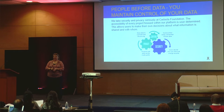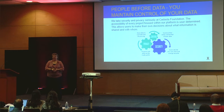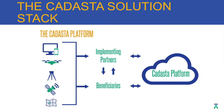If you go to cadasta.org, in our resources section, we've written about the risks and opportunities of open data in land. This is the toned-down version of the Cadasta solution stack. We allow many different types of inputs — from computers to drones to traditional surveying equipment to paper maps. We work with implementing partners, those NGOs that are already active in places, and through them with beneficiaries. We provide a secure, stable place where they can store that data in the Cadasta platform.